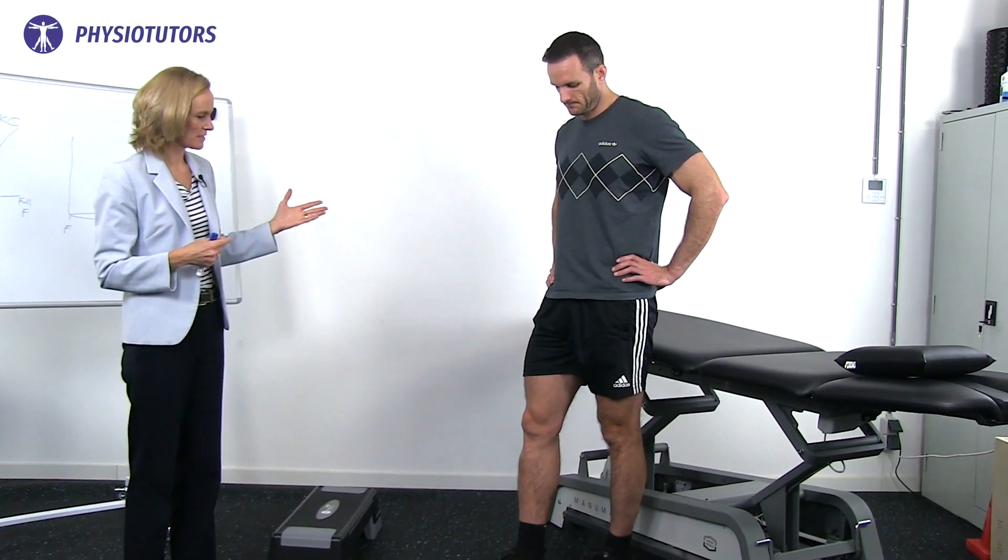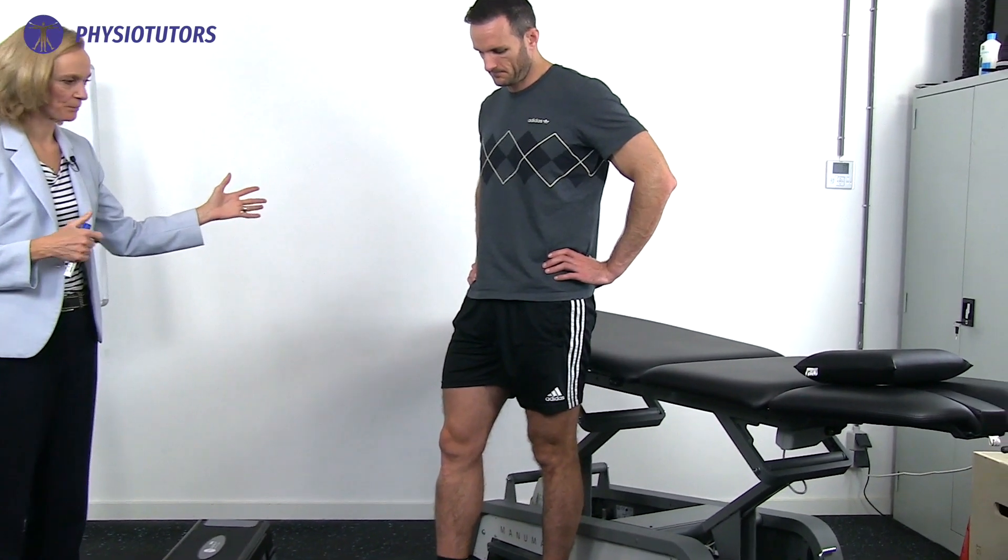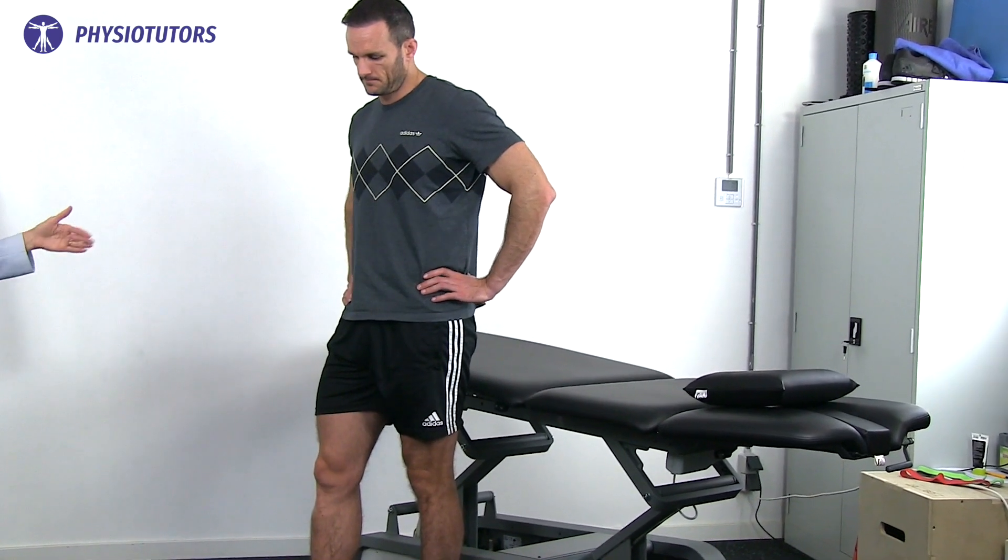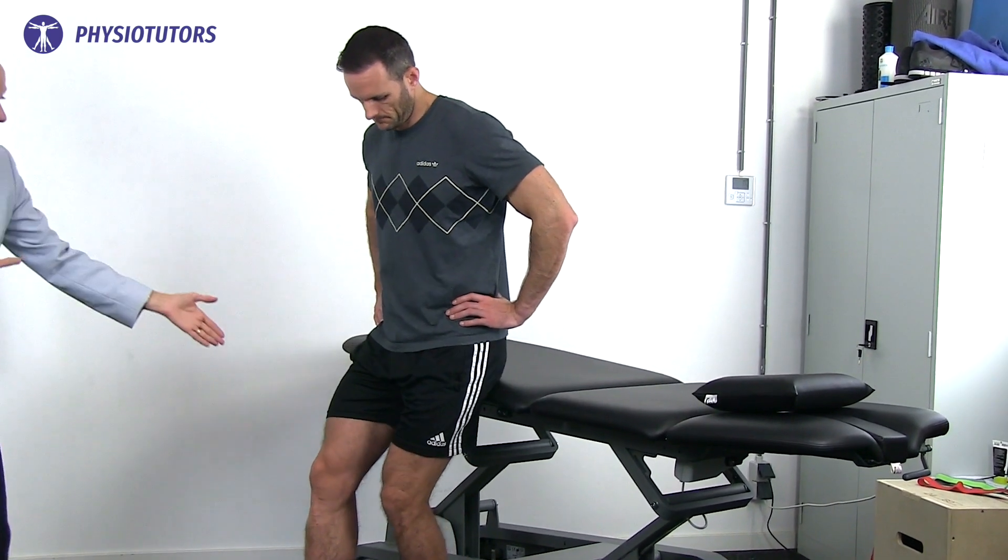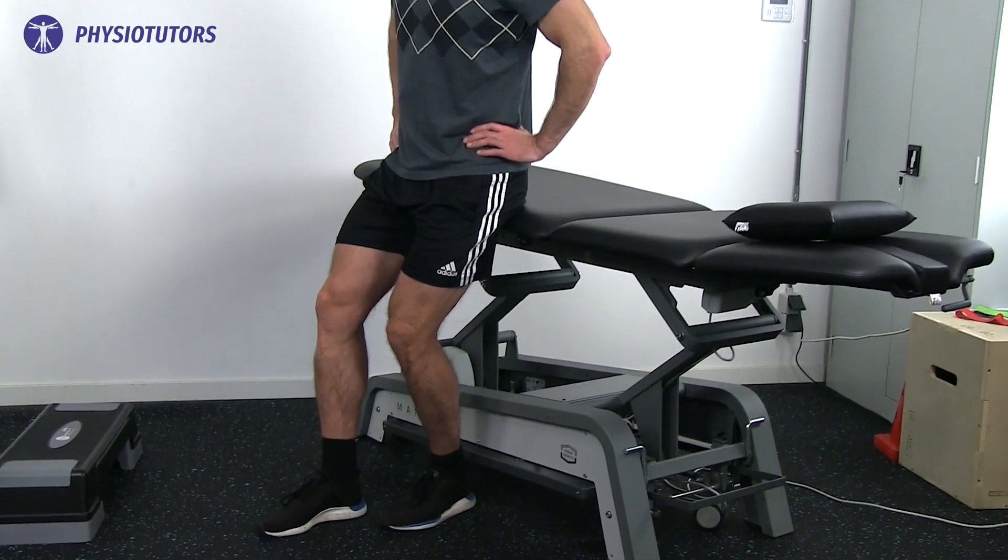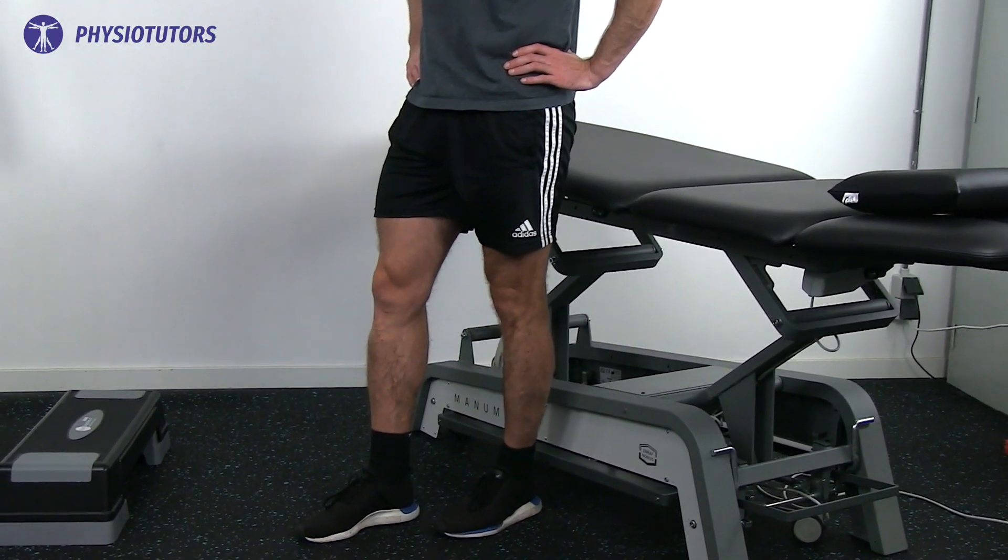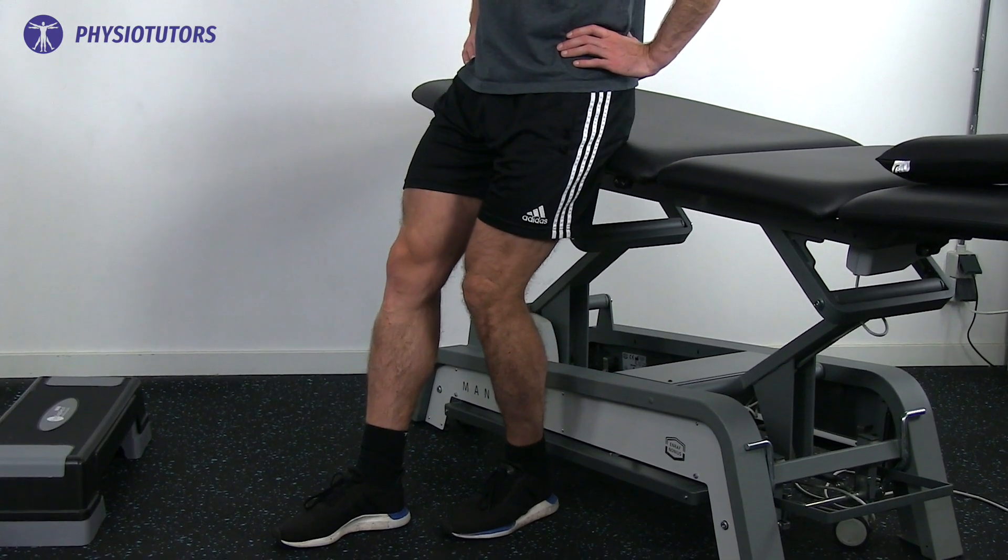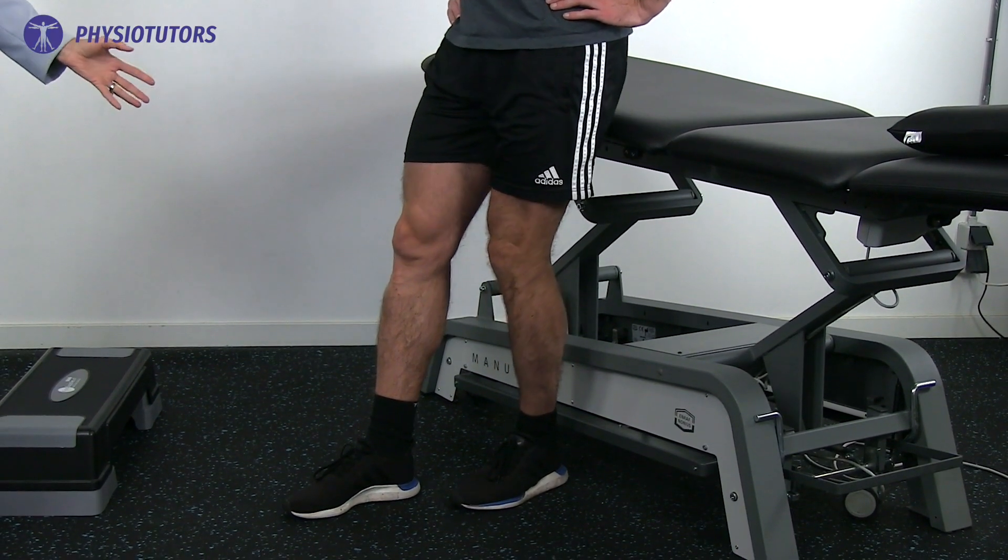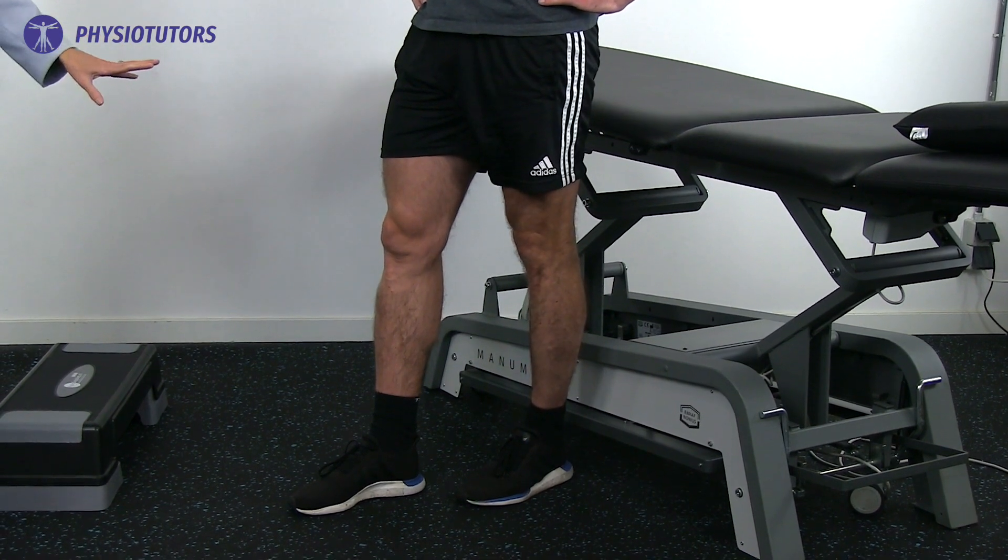We're going to start from perching on the edge of, in this case a plinth, but at home it could be a window ledge, a sofa arm, something that puts the knee into no more than about 50 degrees of knee flexion. Then it's a slow stand up. Initially I put the other leg forward so it can't weight bear too much but it's just helping a little bit for balance.